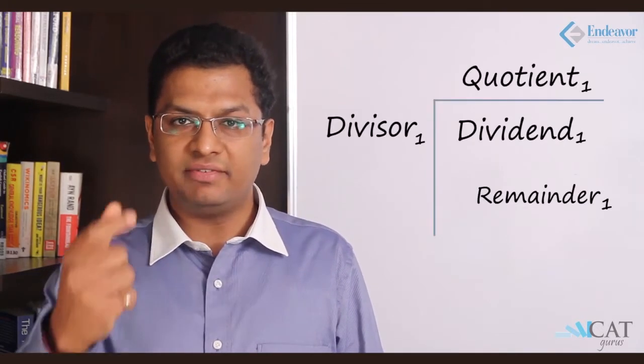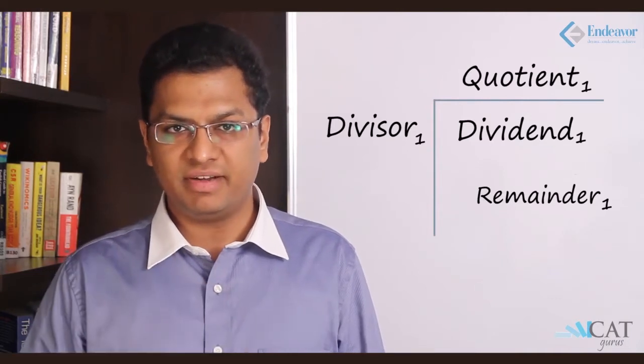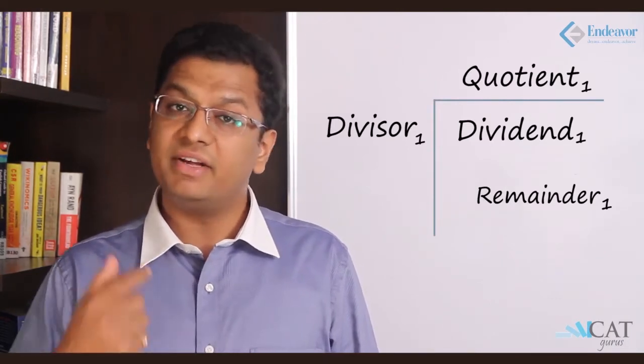So how does successive division happen? Let us look at this. The dividend is divided by the first divisor. We get a remainder and we get a quotient.